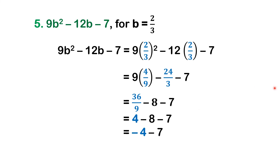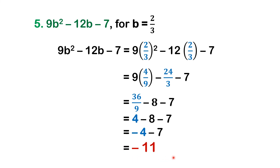Copy negative 7. Now we have negative 4 minus 7. Both are negative, so add 4 and 7 and copy their sign. 4 plus 7 gives us 11. Both are negative, therefore the answer is negative 11.